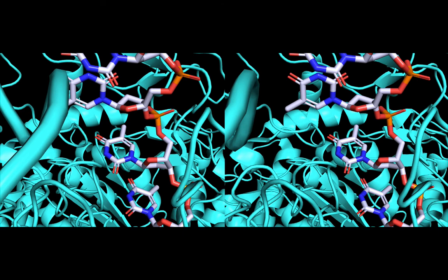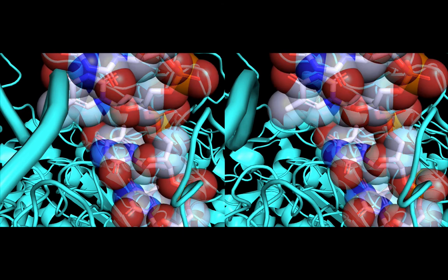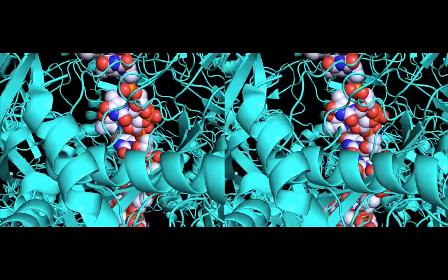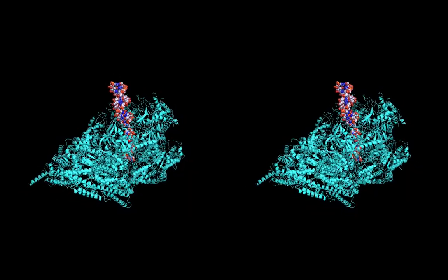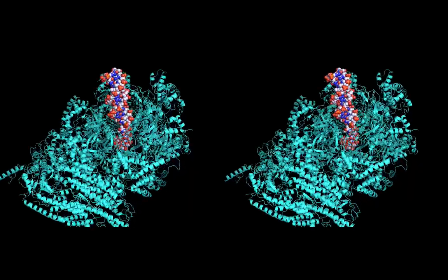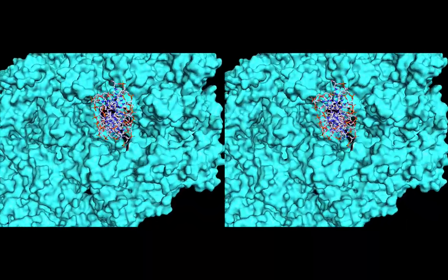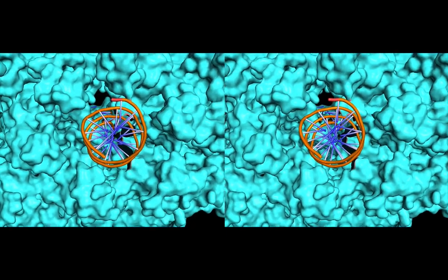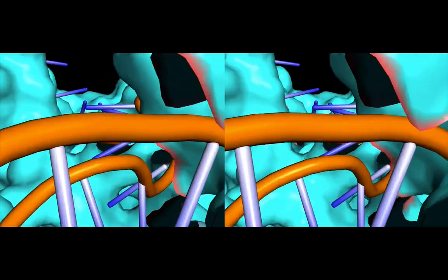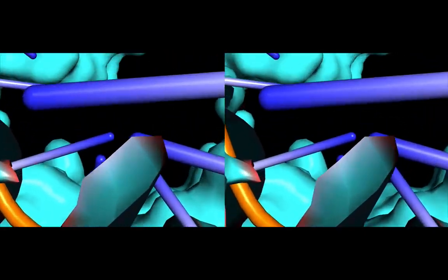Notice how the unwound strand of DNA is held apart from its complementary strand by being buried into the interior of the enzyme? This structure was actually not captured using protein crystallography. It was done using a technique called cryoelectron microscopy, and the pioneers of this technique won the Nobel Prize for Cryo-EM in 2017.